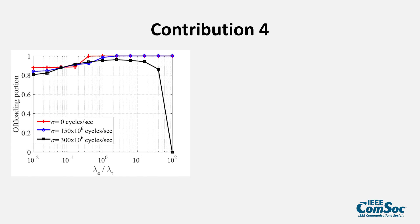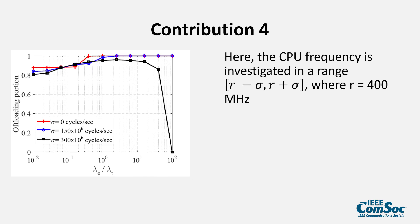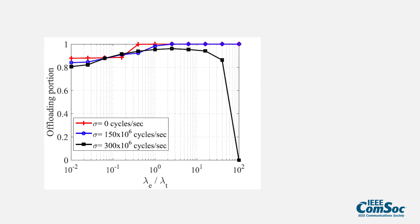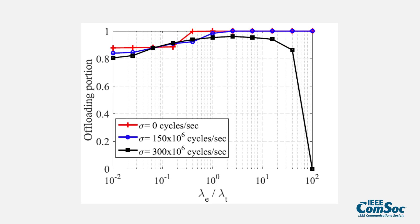Finally, we also observe the impact of CPU frequency on the offloading decision. In our simulation, the CPU frequency is investigated in a range from R minus sigma to R plus sigma. We found that in the case of being highly focused on energy consumption, the frequency range can change offloading decisions from offloading all tasks to edge nodes to locally processing all tasks. You can check the proof of this phenomenon in detail in our paper.